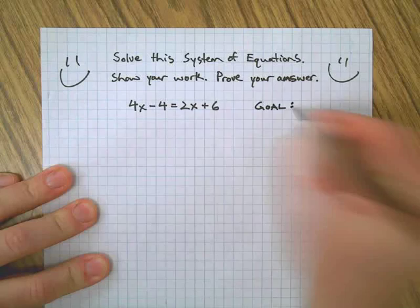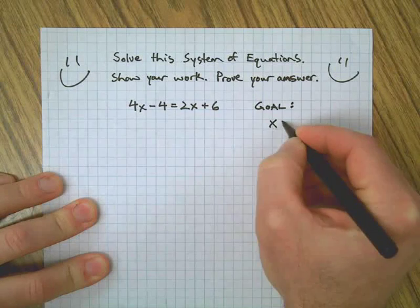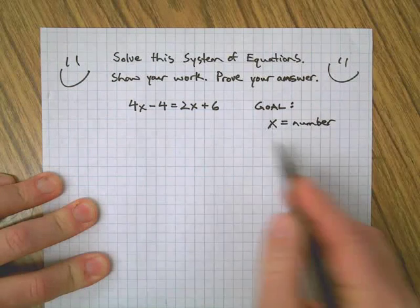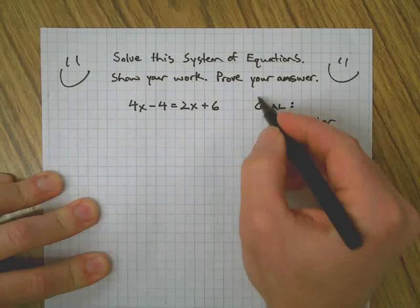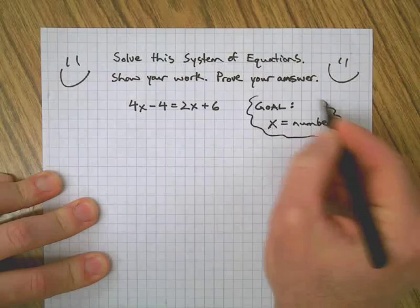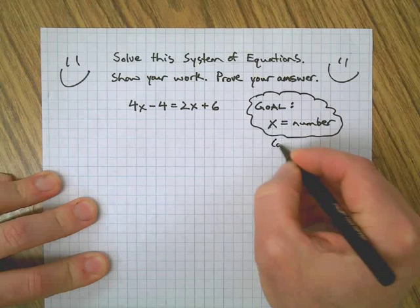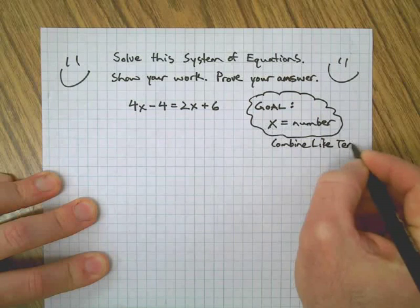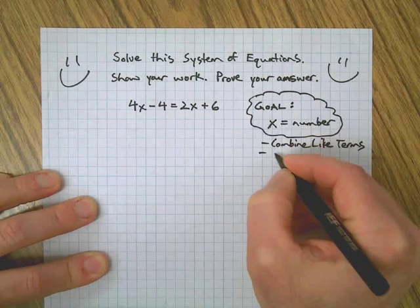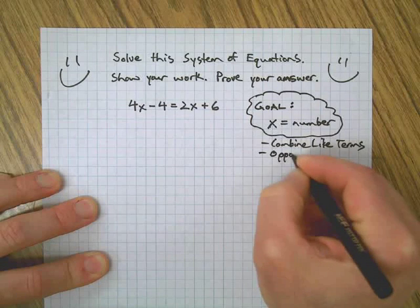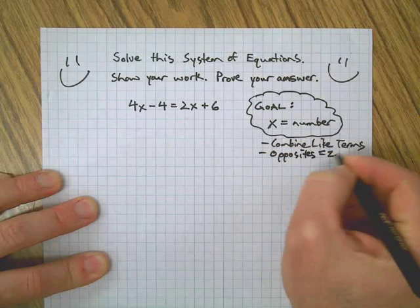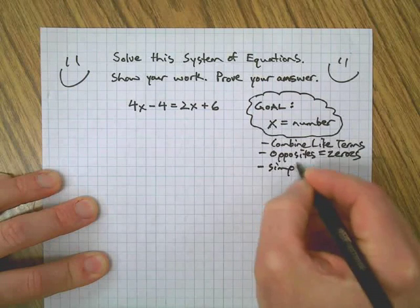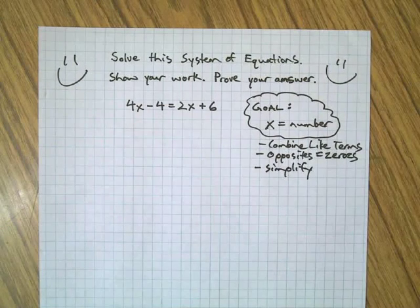In case you missed it, our goal is to end up with something that looks like this: X on one side and a number on the other side—not 2x, not 3x, just a single X and a single number. This is going to involve combining like terms, finding opposites to create zeros, and simplifying things. Those are the steps we need to know, the skills we have to accomplish our goal: X equals the answer.